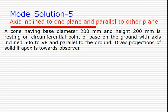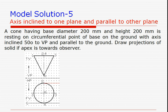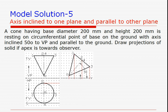In the initial position, with the axis perpendicular to the VP and the apex towards the observer, only the base is seen in the front view as its true shape. If the apex is towards the observer, it will be positioned towards the front view; if it is away from the observer, the apex will be away from the front view. We then incline the axis from 90 degrees to 50 degrees to the VP in the second step.